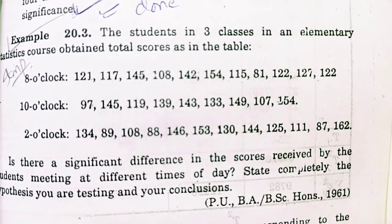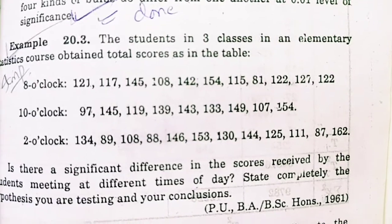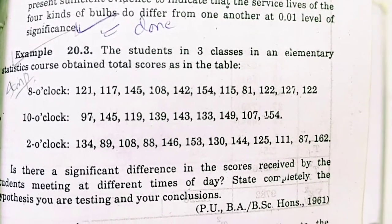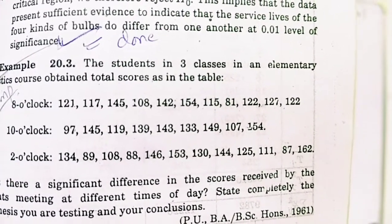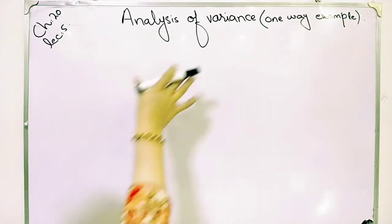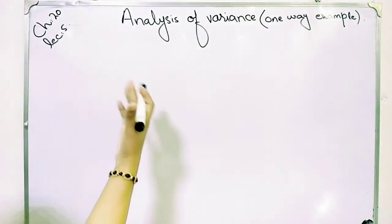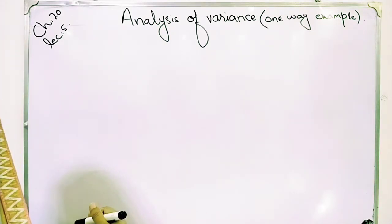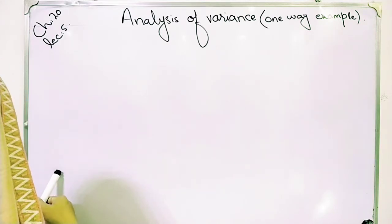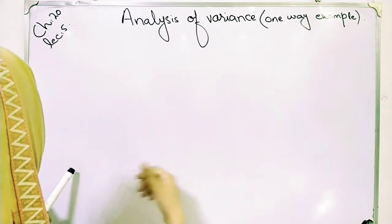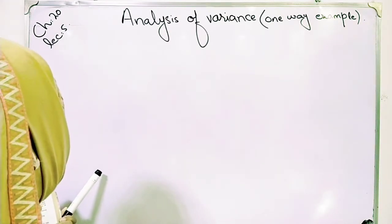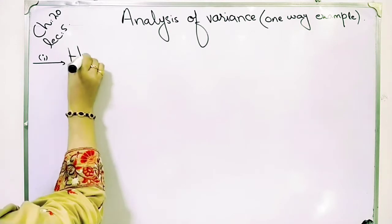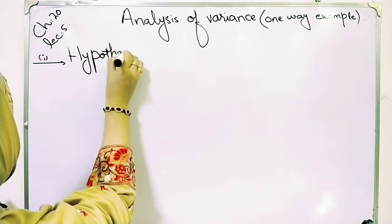Students, this question is that students in three classes in an elementary statistics course obtain total scores as given in the table. We have scores given at 8 o'clock, 10 o'clock, and 2 o'clock. The question asks: is there a significant difference in the scores received by students meeting at different times of day? State completely the hypothesis you are testing and your conclusions. The first step is to create a hypothesis.